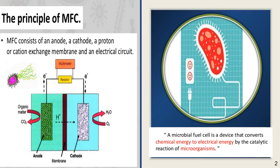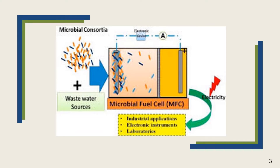Microbial fuel cells consist of an anode, cathode, and a proton or cation exchange membrane. Microorganisms are responsible for degrading the pollutants present in the wastewater. As a result of this catalytic action, electrons are released. These electrons released by the microorganism can be transferred from the anode to the cathode, completing a circuit which results in the generation of electricity.